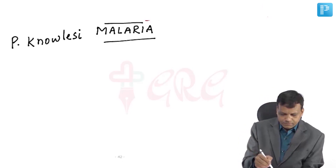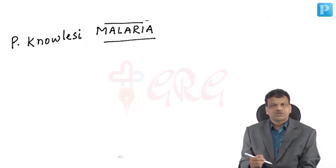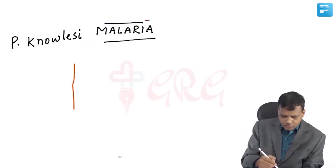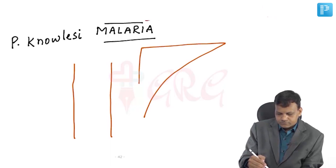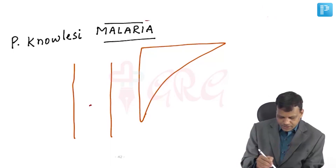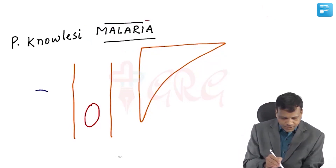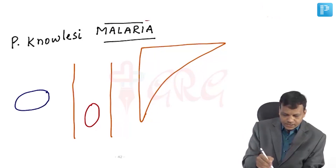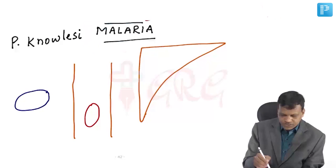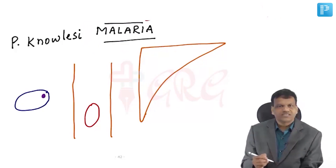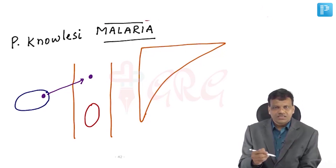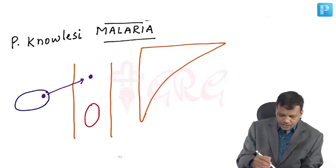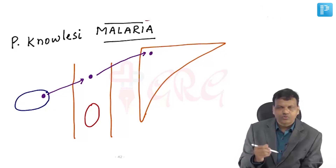The malarial parasite Plasmodium — how does it cause infection? In the human body, we have blood and liver, with RBCs in the blood. Plasmodium is transmitted by the Anopheles mosquito. The female Anopheles contains sporozoites of Plasmodium, which is the infective stage. When the mosquito bites, sporozoites enter the blood, but they do not stay there — within a few minutes they travel to the liver.